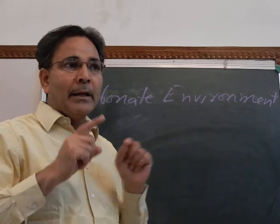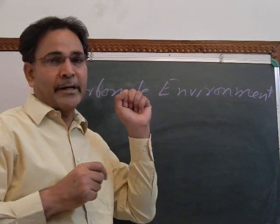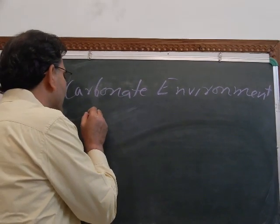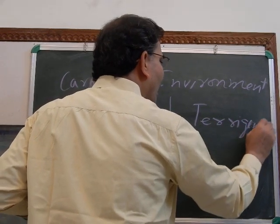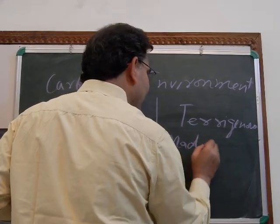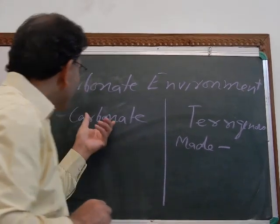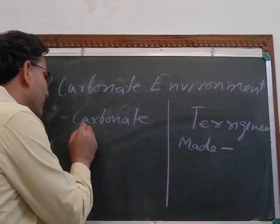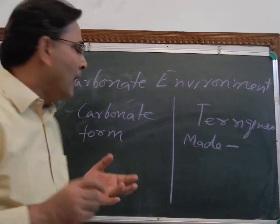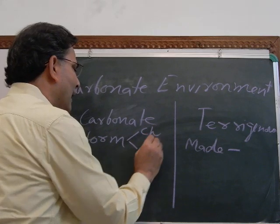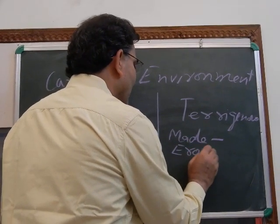The second type of siliciclastic marine environment, in which there is no input of clastic, pterigenous, or sandy sediment, is the carbonate environment. The main difference between carbonate sediments and pterigenous sediments is that pterigenous or clastic sediments are made by the process of weathering and transportation, whereas carbonate sediments are not made but formed — formed by the process of precipitation, or by chemical and biochemical processes.